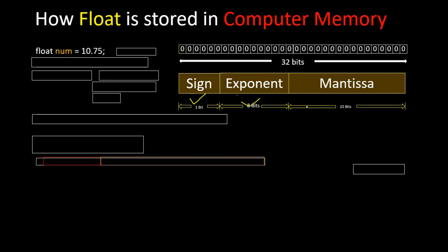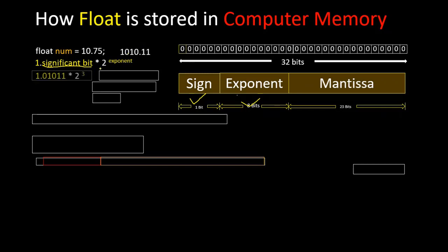If we convert the number 10.75, it will look like this in binary: 1010.11. Now we have to normalize this binary number into the format where we have one point here as the significant bit, some bits after, and then two to the power of an exponent. Converting this number into that format, it will look like 1.01011 times two to the power three.